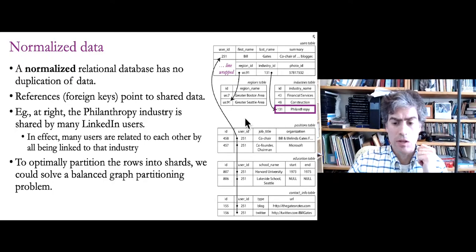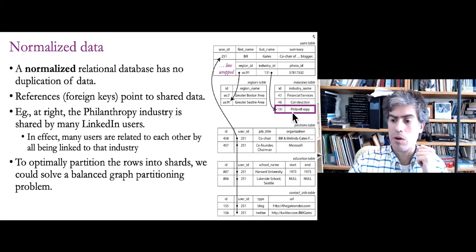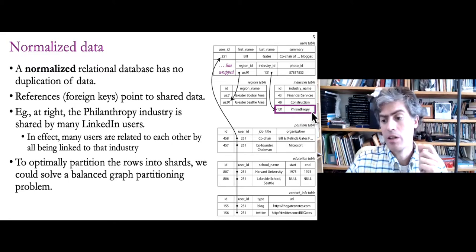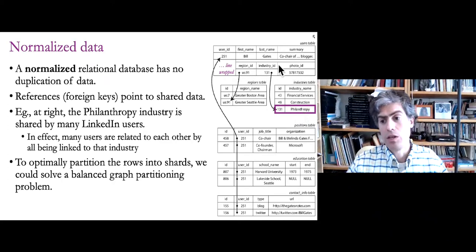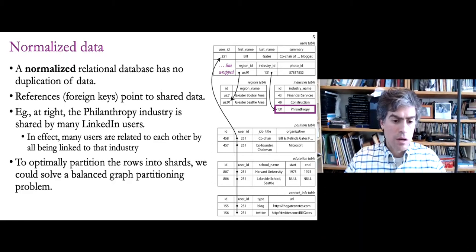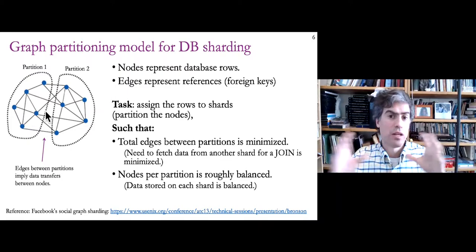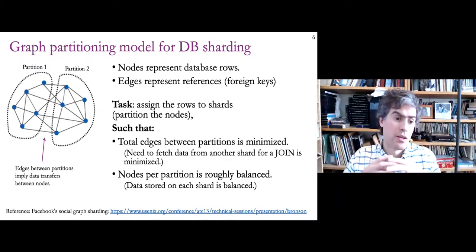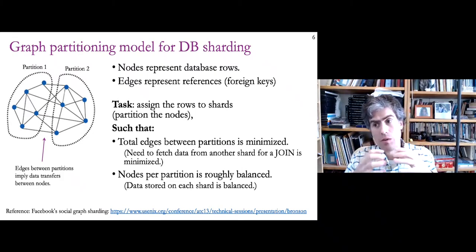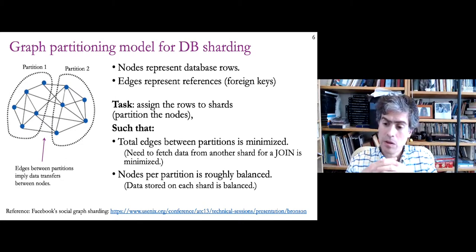This normalization allows for efficient storage by avoiding data duplication, so we can edit data in one place. If we wanted to change 'philanthropy' to 'philanthropy and charity,' that change applies to all users in that industry. But those foreign key relationships make partitioning difficult, because related data has to be split among partitions. We want closely related data to be in the same place rather than two different places.